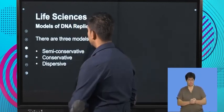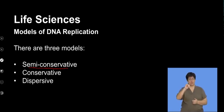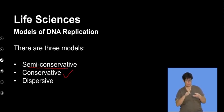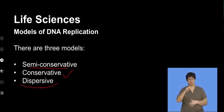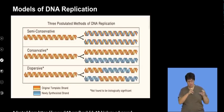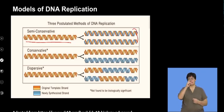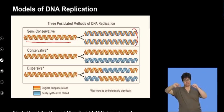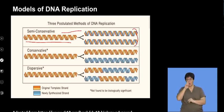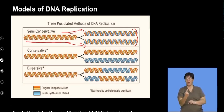The first model we're looking at is called the semi-conservative model. The second model is called the conservative model, and the third is a dispersive model. These models essentially try to explain how replication can be understood. An overview can be illustrated using simple colors. Looking at the semi-conservative model at the top, it produces two new molecules of DNA, each containing part of the original strand shown in yellow and part of a new strand shown in blue.